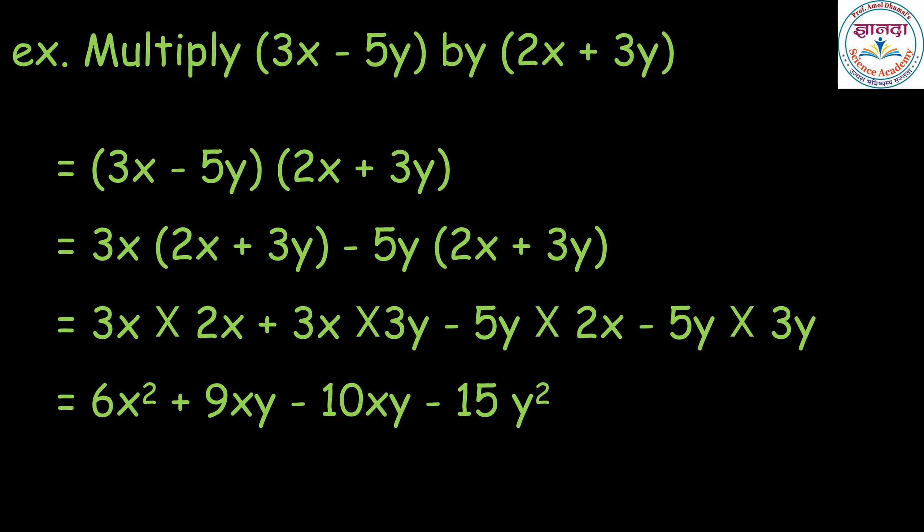Now adding the like terms, we get 6x square; 9 minus 10 is minus 1, that is minus xy, minus 15y square. Therefore the answer is 6x square minus xy minus 15y square.